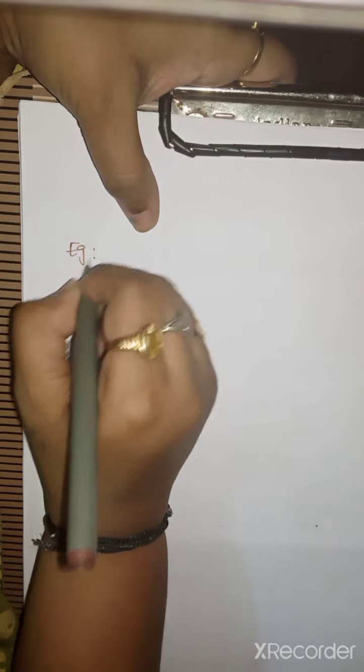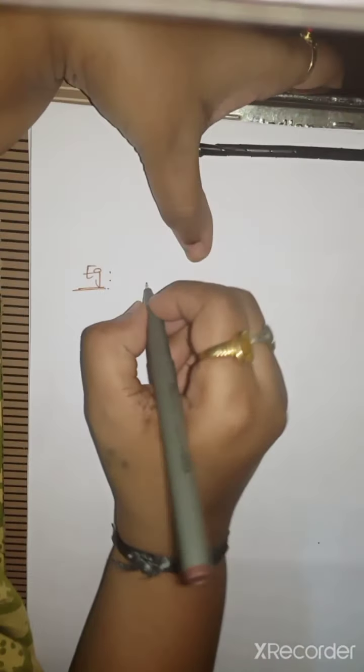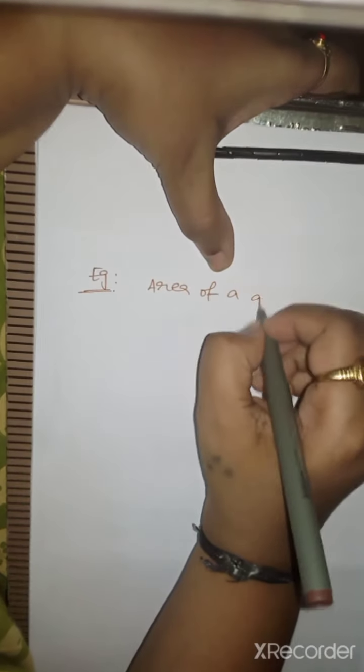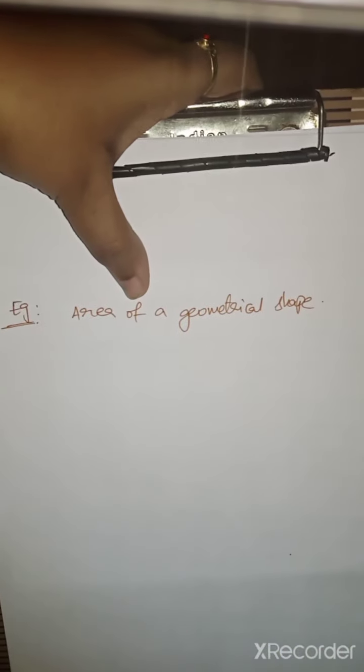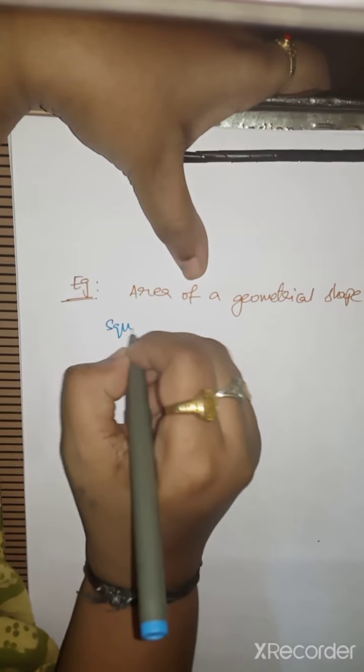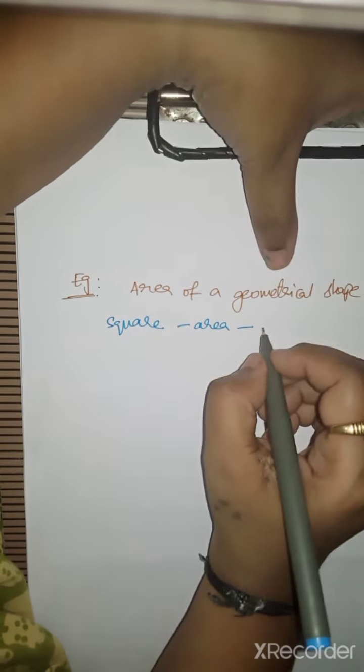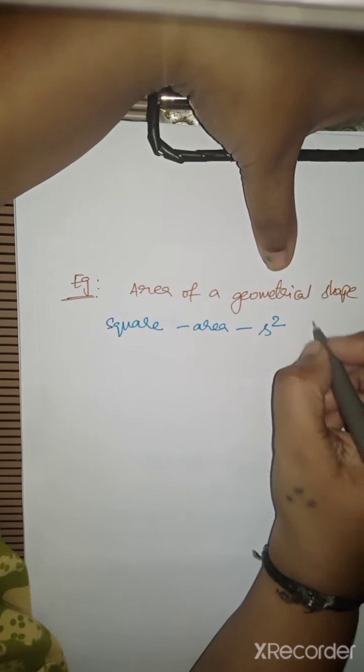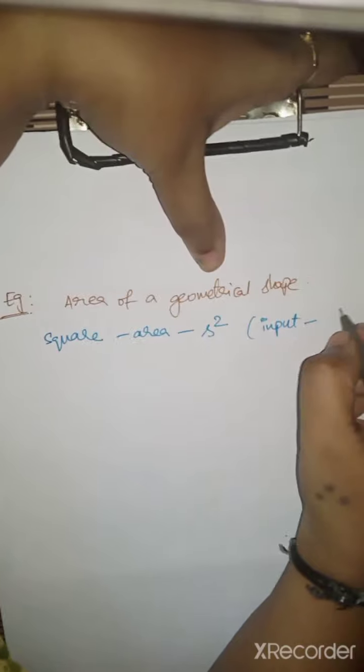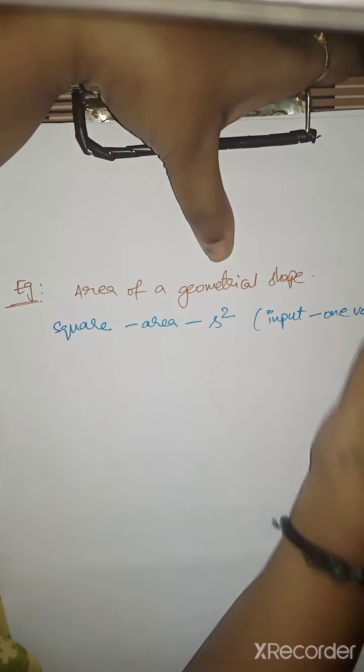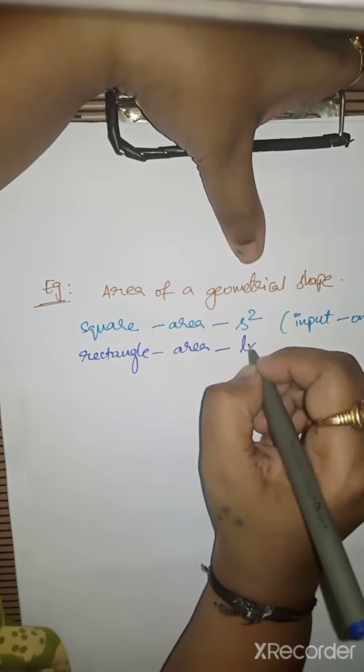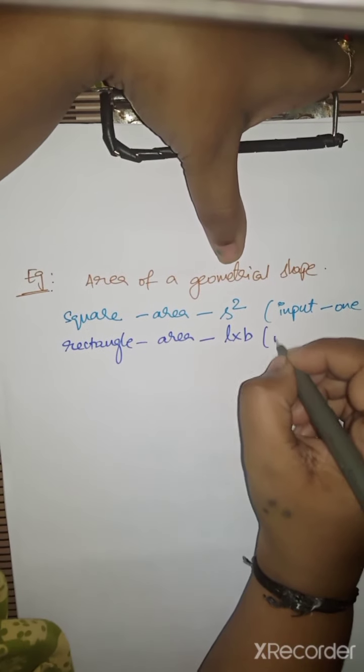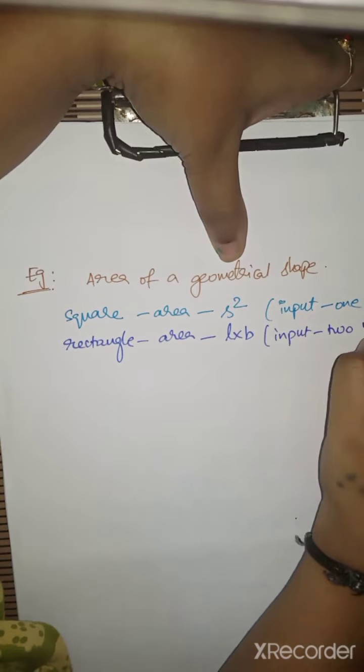Let me give you another example for more clarification of polymorphism. Suppose I want to find the area of a geometrical shape. If it's a square, the formula is S squared - input is one value. If it's a rectangle, the formula is L into B - input is two values.